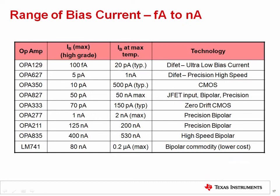This table gives a range of input bias currents for different TI op amps. Values can range from femtoamps for specialized CMOS amplifiers, all the way up to hundreds of nanoamps for high speed and commodity op amps. Bipolar amplifiers will always have higher input bias currents than CMOS amplifiers. Also, bipolar amplifiers with bias current cancellation circuitry, such as the OPA277, will have lower input bias current than bipolar op amps without cancellation, such as the OPA211.